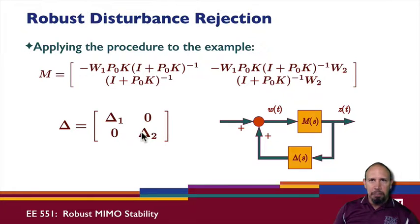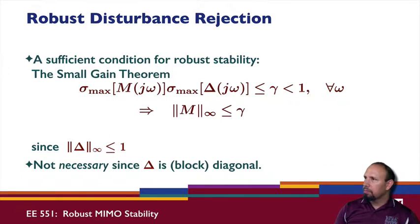A sufficient condition for robust stability with disturbance rejection is that the largest singular value of M(jω) and sigma_max of delta(jω) is less than or equal to gamma, which is strictly less than one for all omega. This obviously requires that the H-infinity norm of M is less than or equal to one. But this is not a necessary condition since delta is block diagonal.